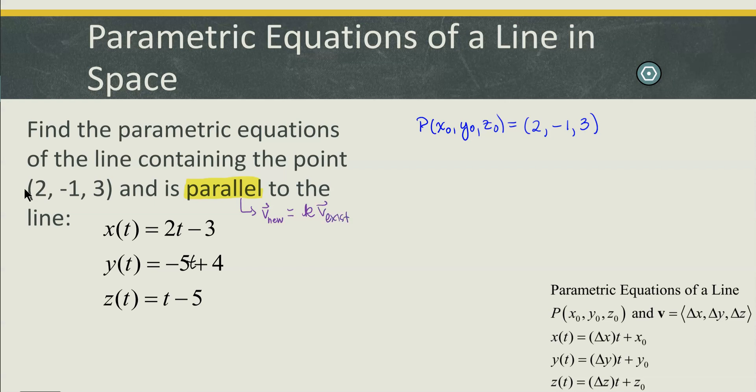That way we know that the two lines are parallel. So at this point, I need to simply determine what is the direction vector for this existing line that I have. Well, again, looking at the structure here of our parametric equations, we can see that the change in x, change in y, and change in z are the coefficients of our parameter t.